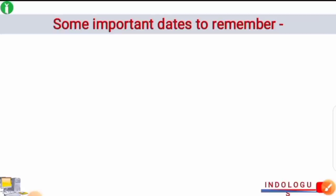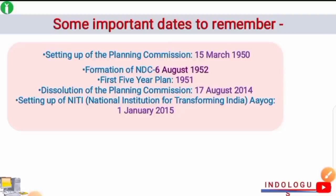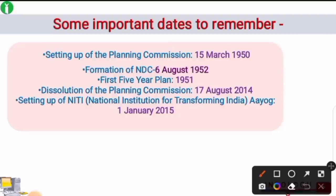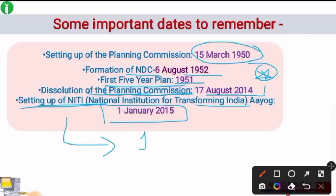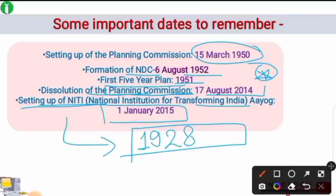Important dates to remember: the Planning Commission was set up on 15th March 1950; the National Development Council was established on 6th August 1952; the First Five Year Plan was implemented in 1951; the Planning Commission was dissolved on 17th August 2014; and it was replaced by the NITI Aayog — National Institution for Transforming India — which was formed on 1st January 2015. Another important date discussed is 1928.